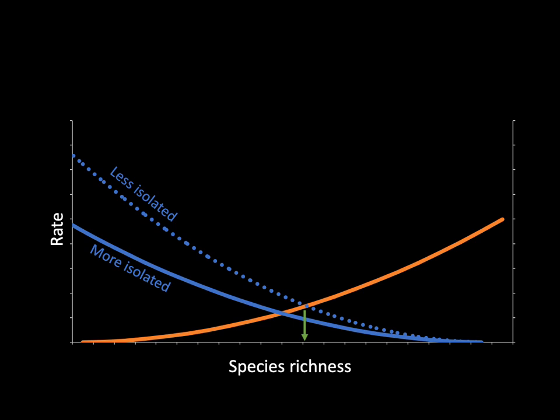Island biogeography predicts the highest species richness on large islands close to the mainland — large islands that are not very isolated. In contrast, the lowest species richness would be expected on small and isolated islands. It's important to note, however, that the theory only predicts the number of species on an island, not their identity. This is because it expects species composition to change through time — the theory predicts continuous extinctions and colonizations, so the species on an island would potentially change from time to time. But the balance of colonization and extinctions is expected to remain roughly the same, in other words in equilibrium, and as a result species richness will be roughly similar.